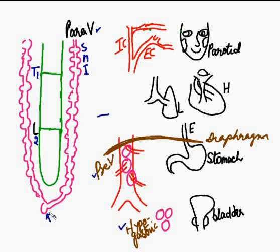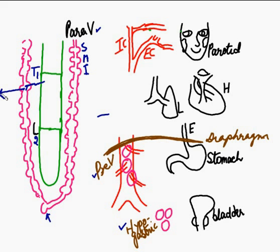From the T1 to L2 segments of the spinal cord, fibers originate from the lateral horn of the grey matter. These are preganglionic fibers — they travel out and enter the ganglion via the white rami communicans. They synapse there, and then the postganglionic fiber passes out through the grey ramus into a spinal nerve and is distributed to skin, sweat glands, and the erector pili muscle.